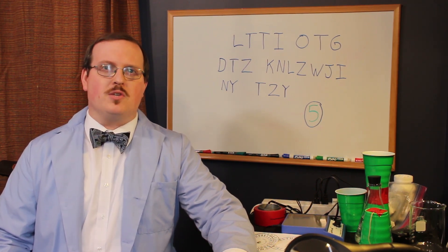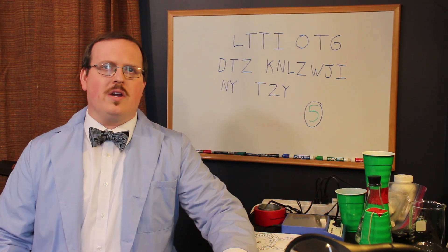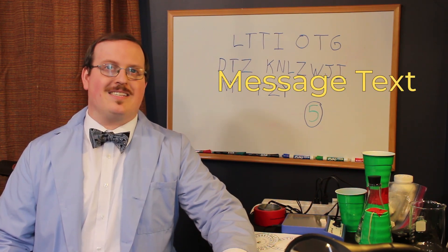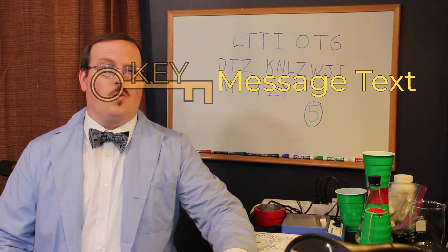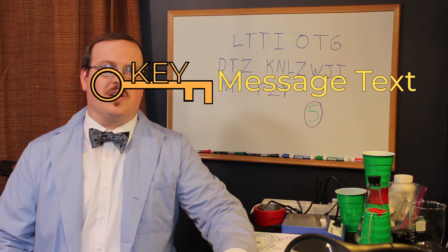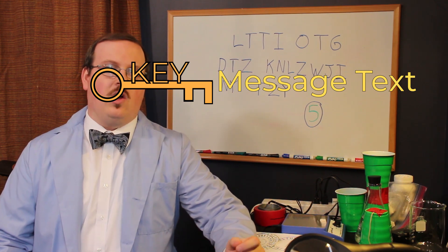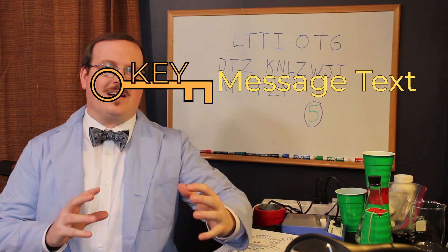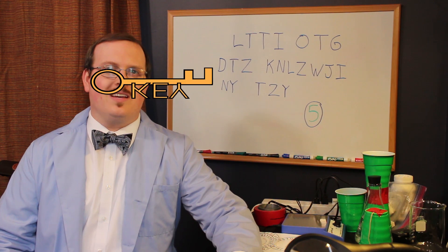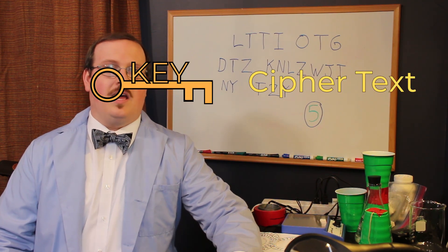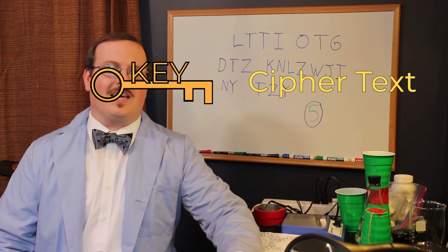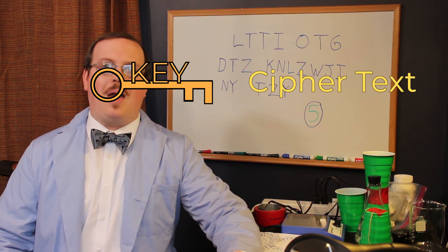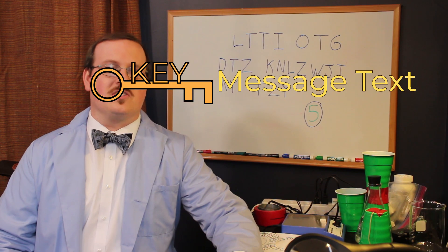Anything that's in a message we want to send to somebody, we're going to call the message text. That's the full message, what we want people to be able to read. When we lock up that message using our special key, what's on the other side, that locked up box, that's called ciphertext. And when the person on the other side receives the ciphertext, they can unlock it with a key and it turns back into message text so they can read it.